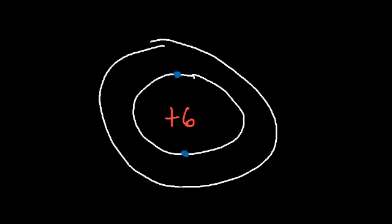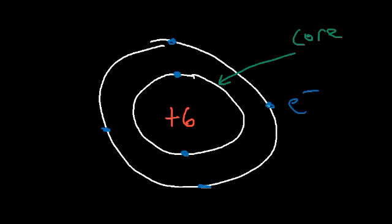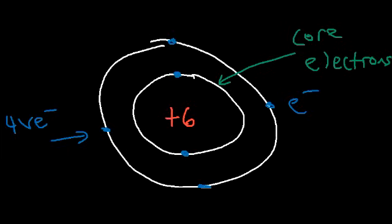In the first energy level, carbon has two electrons — that's the greatest number of electrons you can have in the first shell. In the second shell, or second energy level, carbon has four electrons. The electrons are outside of the nucleus, orbiting it. Electrons carry negative charges, protons have positive charges, and neutrons are neutral. Carbon has a total of six electrons; the two on the inside are known as core electrons, and the electrons in the outermost energy level are known as the valence electrons. So carbon has four valence electrons.